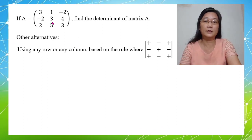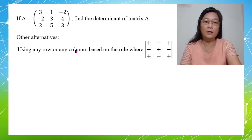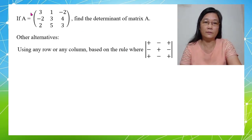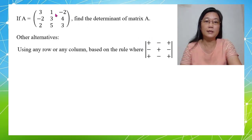When finding the determinant of a 3x3 matrix, there are actually more than one alternative — we can use any row or any column to calculate the determinant, provided that we must follow the sign rule. For example, in the first example just now, I used the first row: the first number gets a plus sign giving plus 3, the second number gets a minus sign giving minus 1, and the third number gets a plus sign giving plus negative 2.